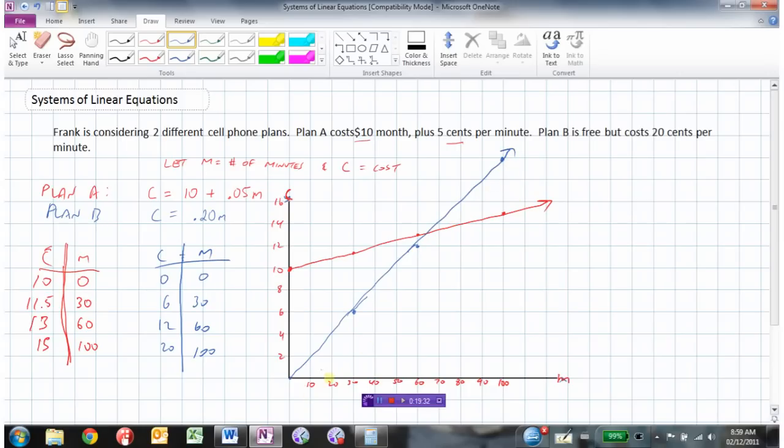So here we have our two graphs. And we can see that the point of intersection is right there. Well, now you're going to see one of the disadvantages here of graphs. How can we tell exactly what that point is?